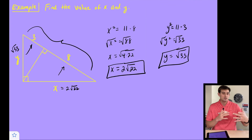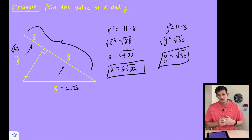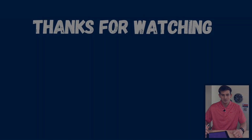So that is the geometric mean — how to find the geometric mean between two numbers, and how to apply the geometric mean to find the altitude of a right triangle and the missing legs of a right triangle.